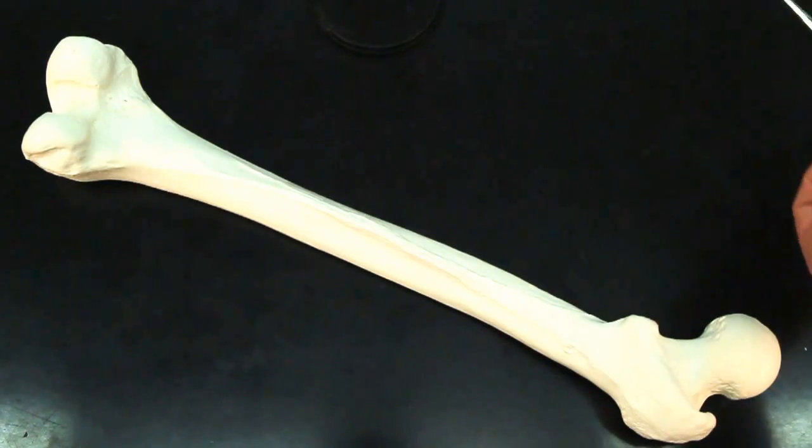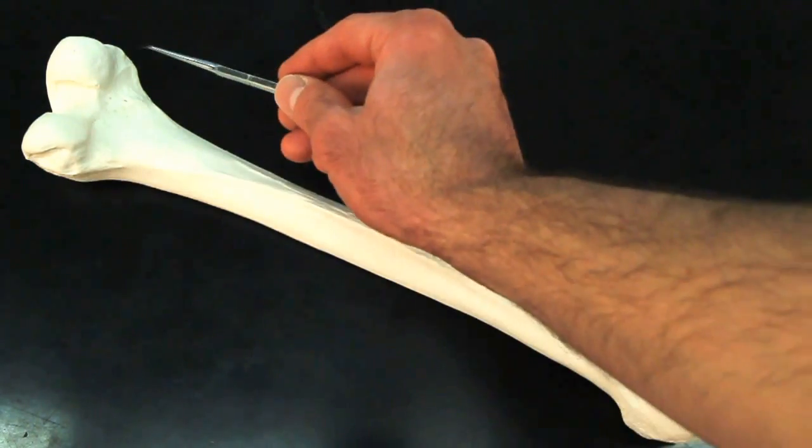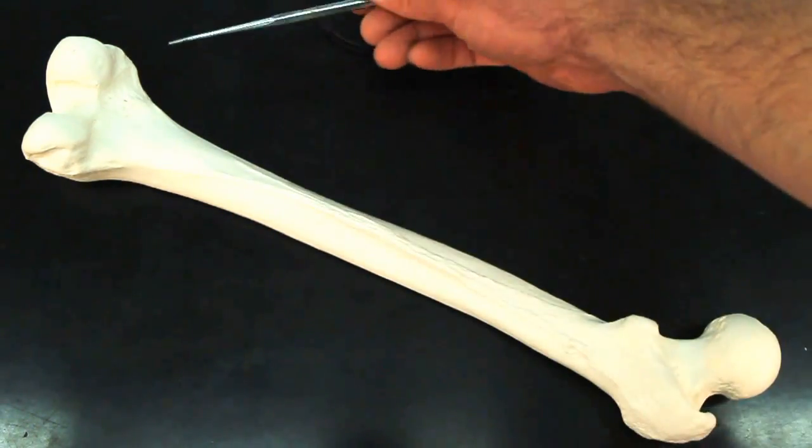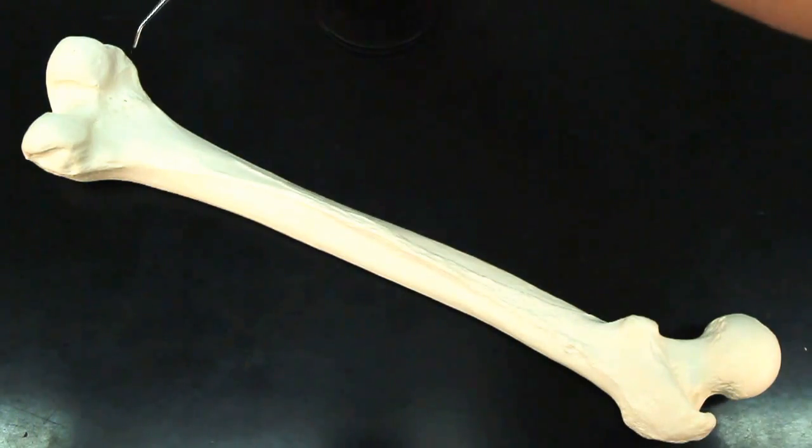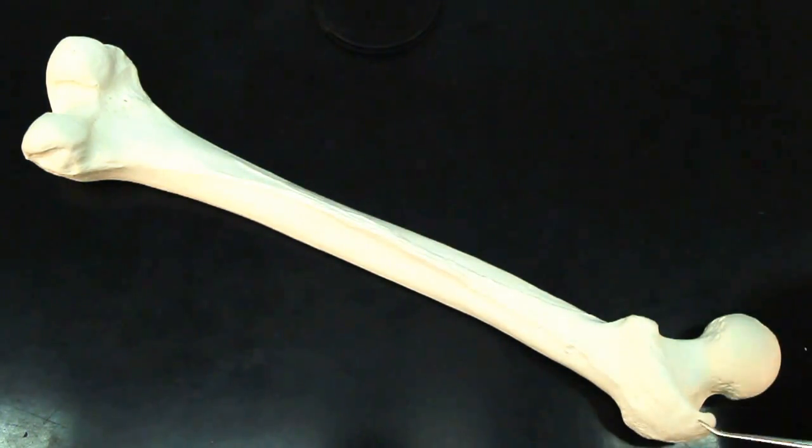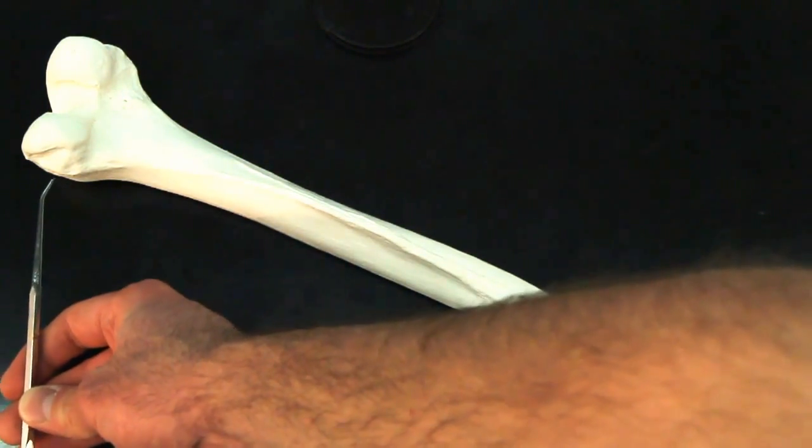And then above that, we're going to have on each side the medial - again, same side as the head - medial epicondyle, and opposite side of the head, lateral epicondyle.